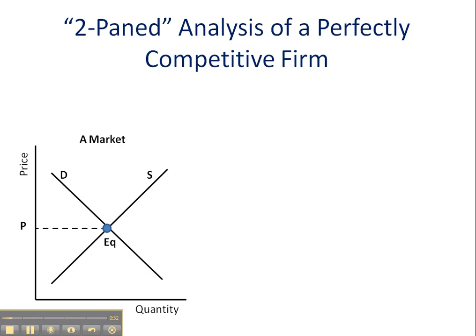Usually when you do your analyses on the AP and IB examinations, you actually start off at the equilibrium position. Many of your homework assignments dealing with perfectly competitive firms deal with an initial equilibrium position. So you shouldn't have any problems with that, but visually, and as a follow-up to the last video, I wanted to show you what a firm operating at a loss looks like and what happens.